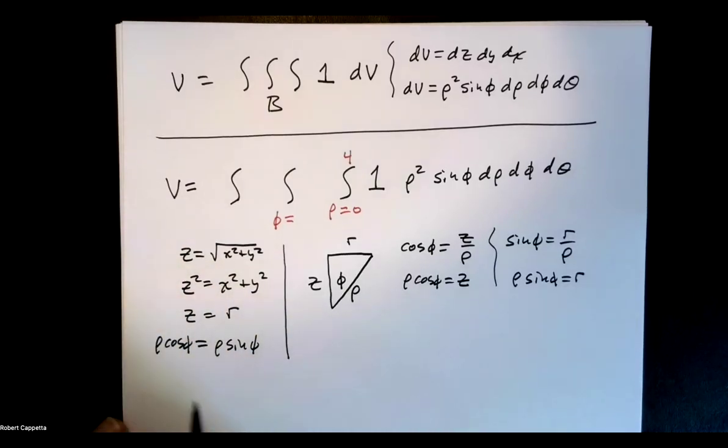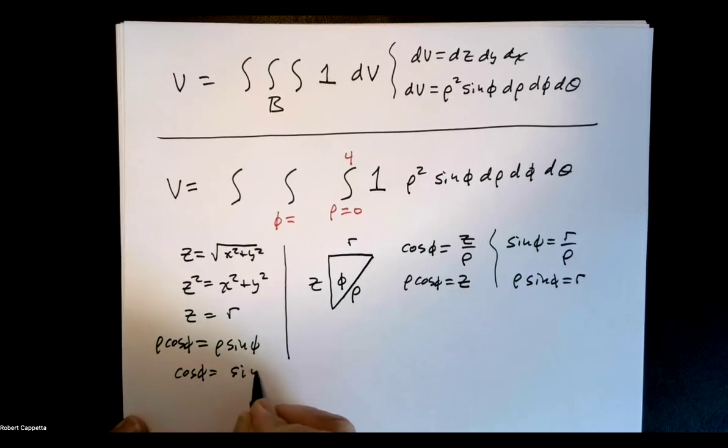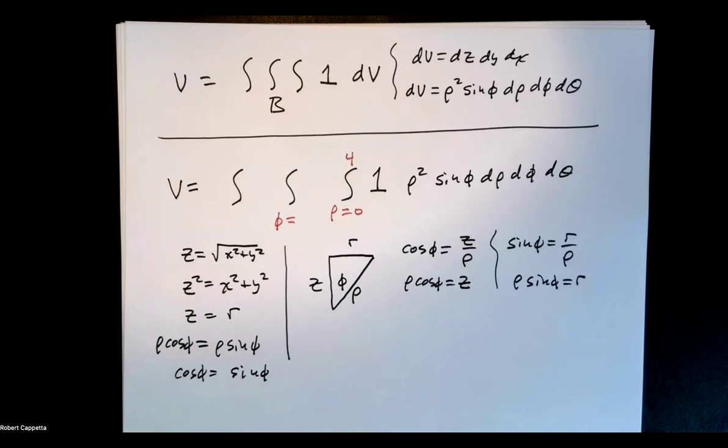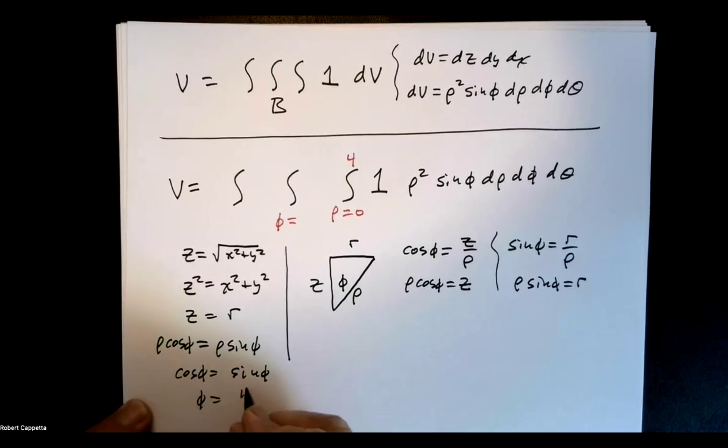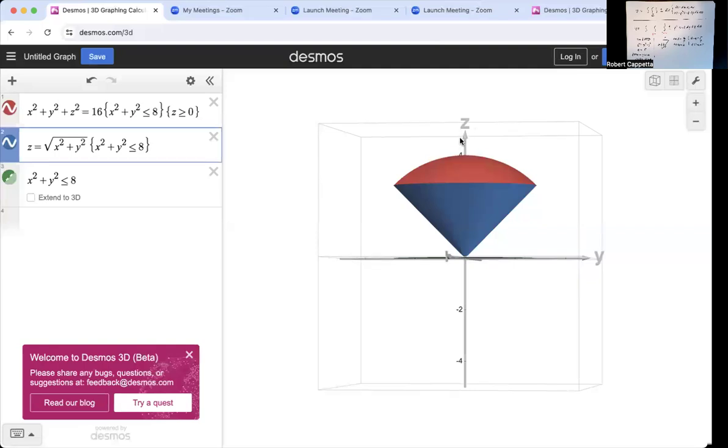Well, what happens there? The rho's divide out. How do I get cos phi equals sine phi? And when does cos phi equal sine phi? 45 degrees when phi is pi over 4. So if we go back and look at that picture, can we believe that? Phi starts at 0, gets to pi over 4, 45 degrees. That seems pretty reasonable to me.